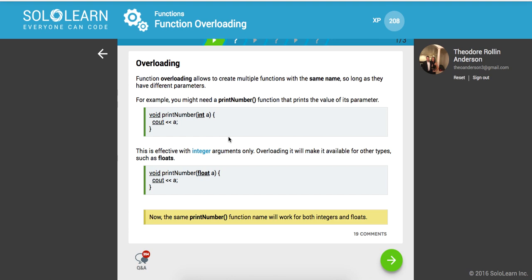You have different use cases. For example, you might need a print number function that prints the value of its parameter. So here it takes in an integer and then we're printing the console output stream, the value of A or what it points to. This is effective with integer arguments only. Overloading will make it available for other types such as floats.